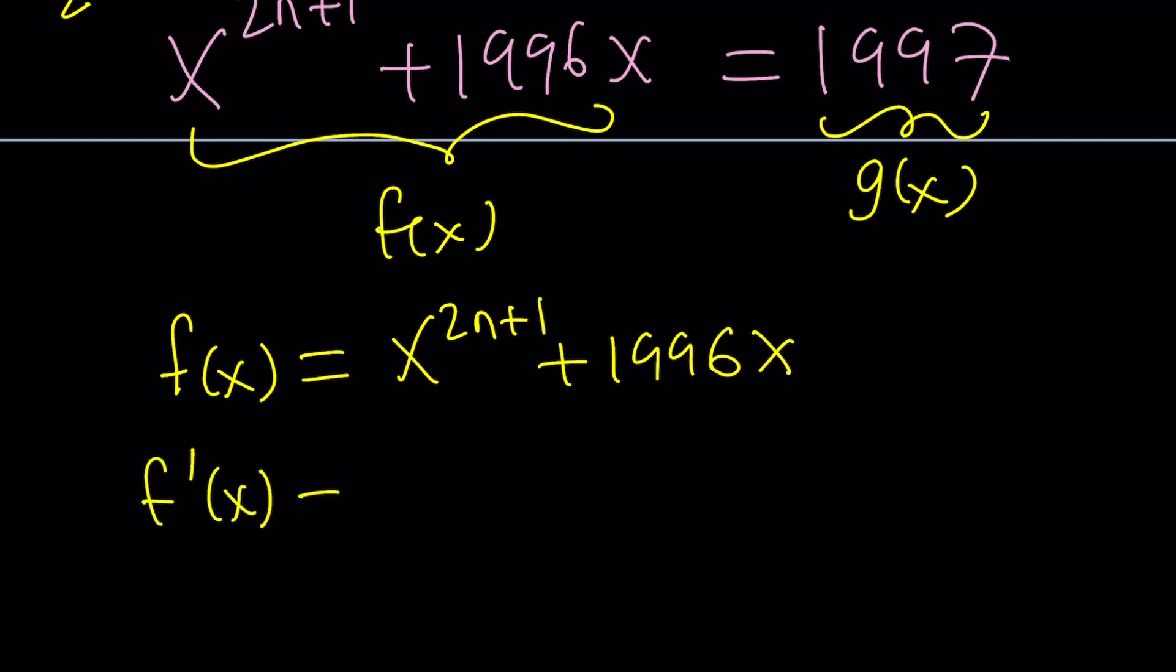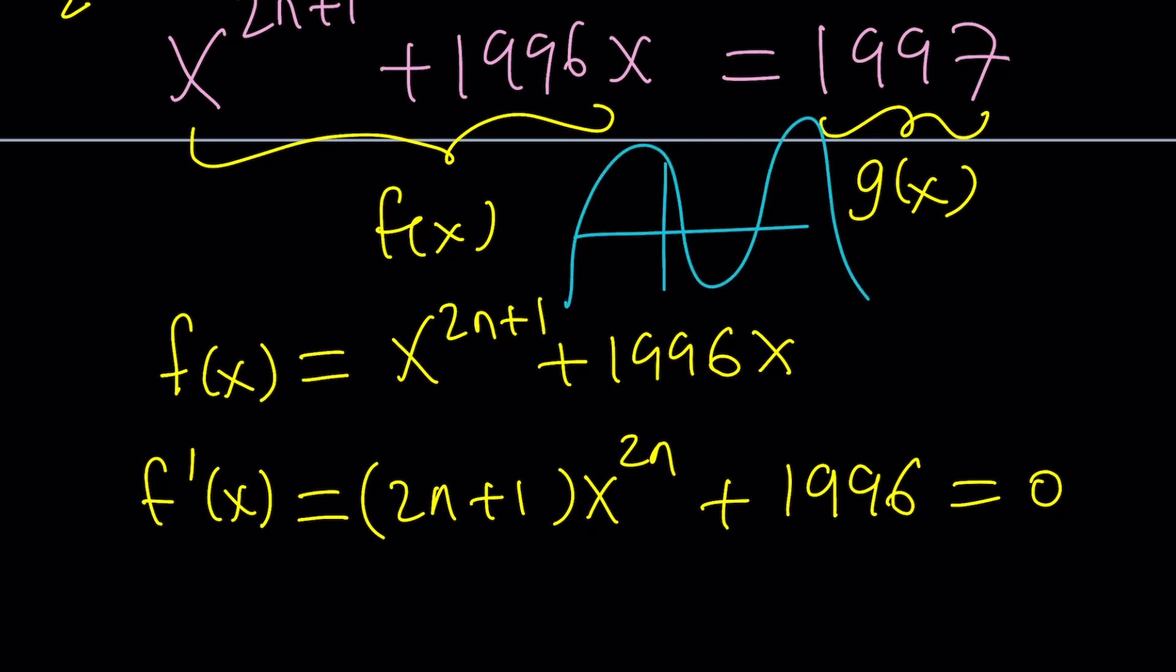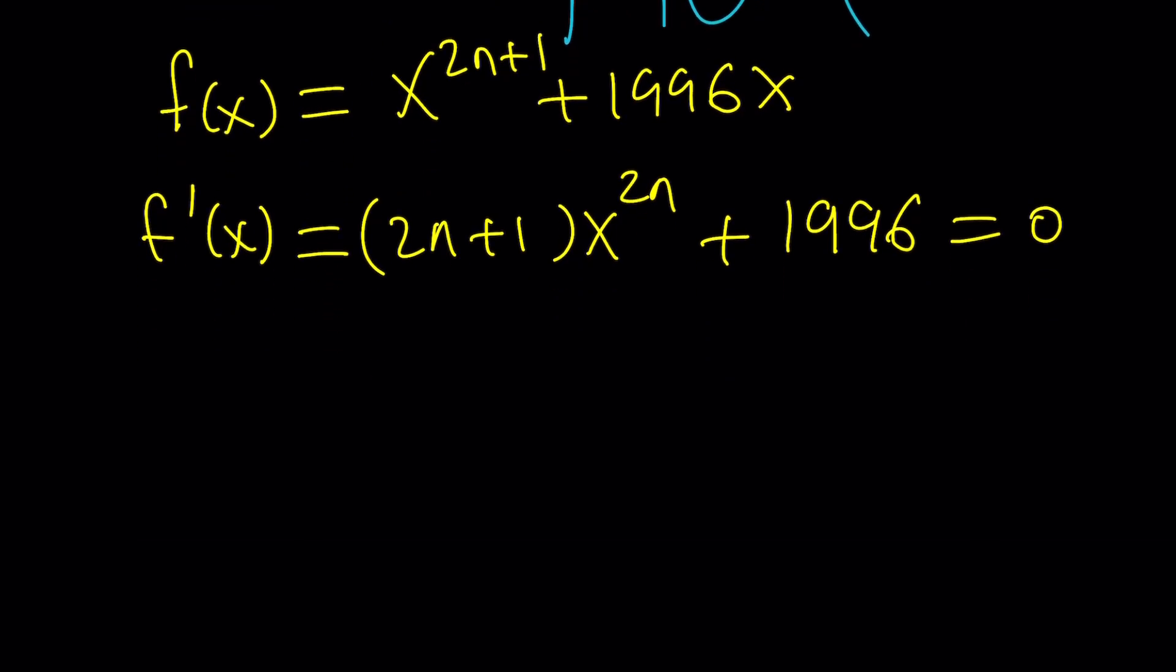Recall what we called f of x. Differentiate it. When I differentiate it, I get 2n plus 1 multiplied by x to the power 2n plus 1996. Then set this equal to zero. You know why? Because I want to find the critical points where the graph has a maxima, minima, or inflection point. Because if our graph is kind of curving, it's probably going to have a lot of intersection points.